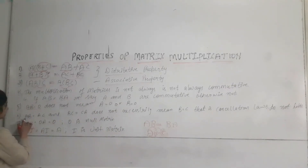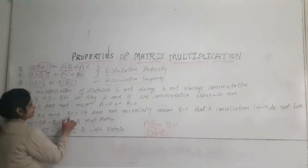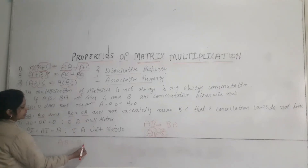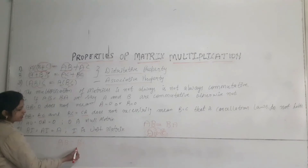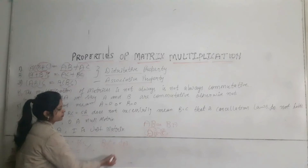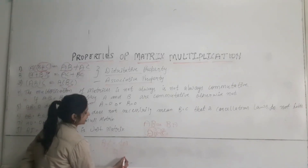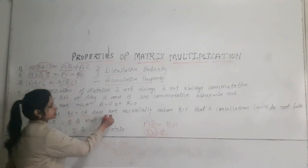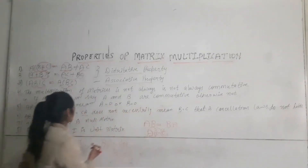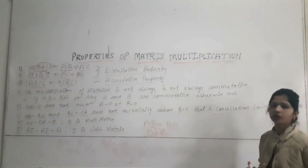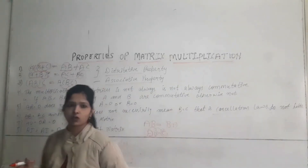The sixth property is: if AB is equal to AC, it does not mean we can cancel A from both sides and say B is equal to C. Similarly, if BC is equal to CA, we cannot cancel C to say B equals A. This does not necessarily mean B is equal to C. This is the cancellation law — it does not hold for matrix multiplication.